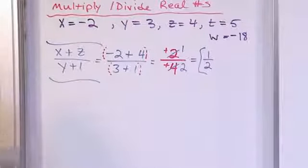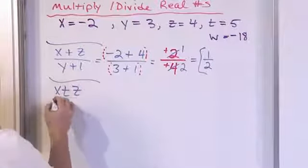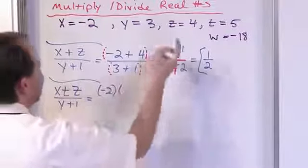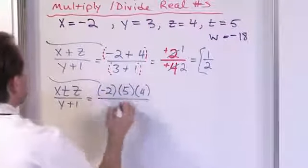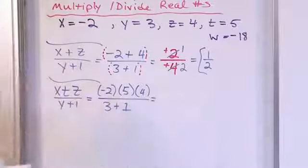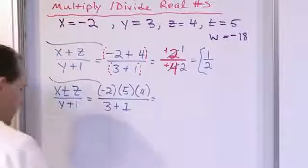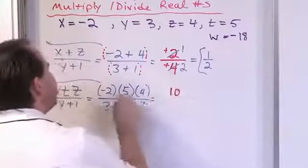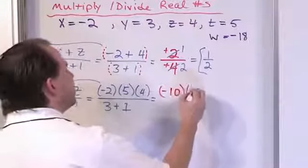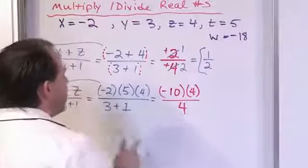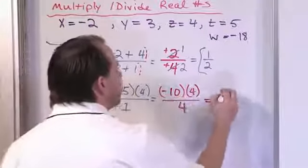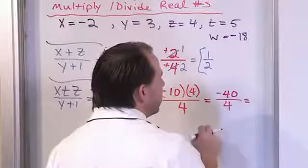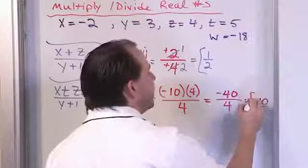Now: x times t times z divided by y plus 1. On top: x is negative 2, times t which is 5, times z which is 4. Bottom: y is 3 plus 1. Handle top and bottom separately. Negative 2 times 5: 2 times 5 is 10, different signs so negative 10. Then multiply by 4: 10 times 4 is 40, different signs so negative 40. Bottom: 3 plus 1 is 4. Dividing: 40 divided by 4 is 10, different signs, so the answer is negative 10.